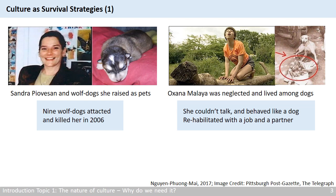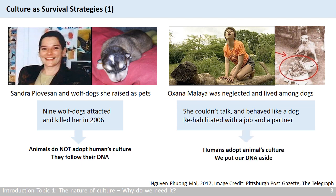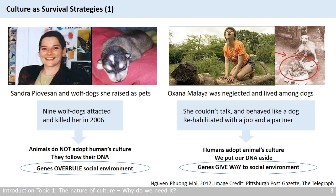Tarzan is one of them, although he is a fancy imaginary character. What we learn from this is that animals do not adopt humans' culture and would follow their DNA. In contrast, humans would adopt animals' culture and put our DNA aside. Just like you and I have adopted the culture where we were born or are living in, these children adopted the culture of the dogs or gorillas who raised them. So for animals, their genes overrule the social environment. But for humans, the reverse is true — our DNA gives way to the social environment.